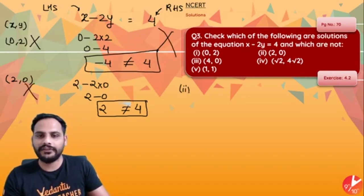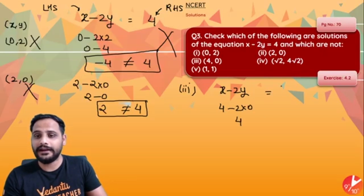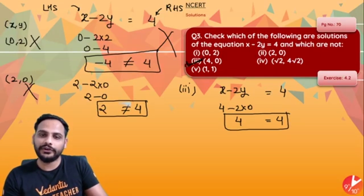Third one, 4, 0. So x minus 2y will be equal to 4 minus 2 into 0 which is equal to 4 and RHS is also equal to 4. So the third one is a solution.